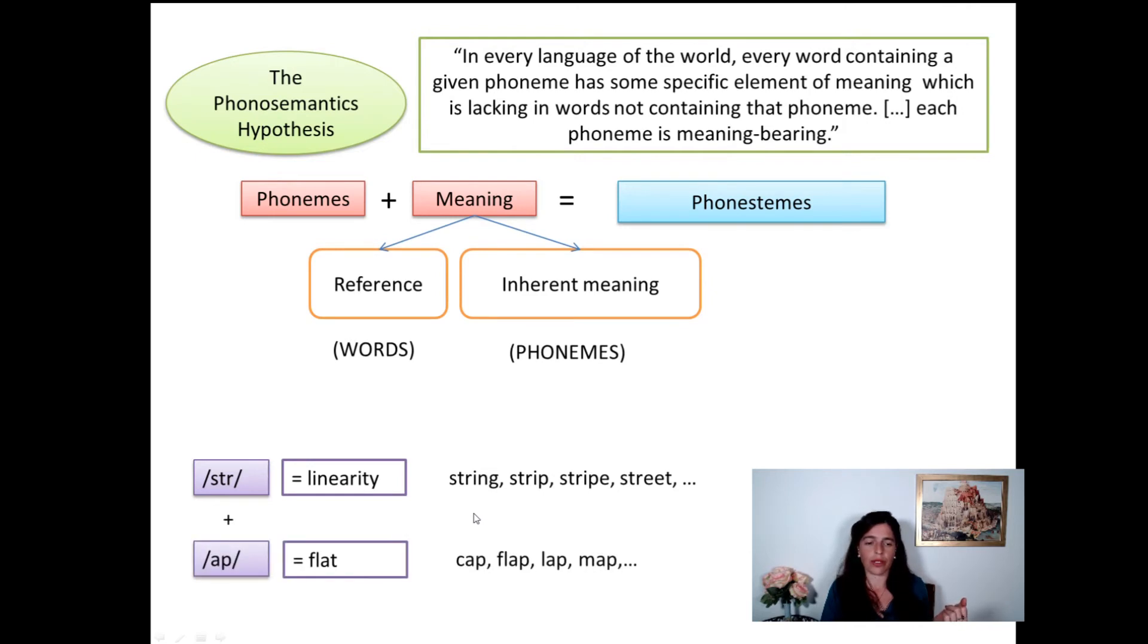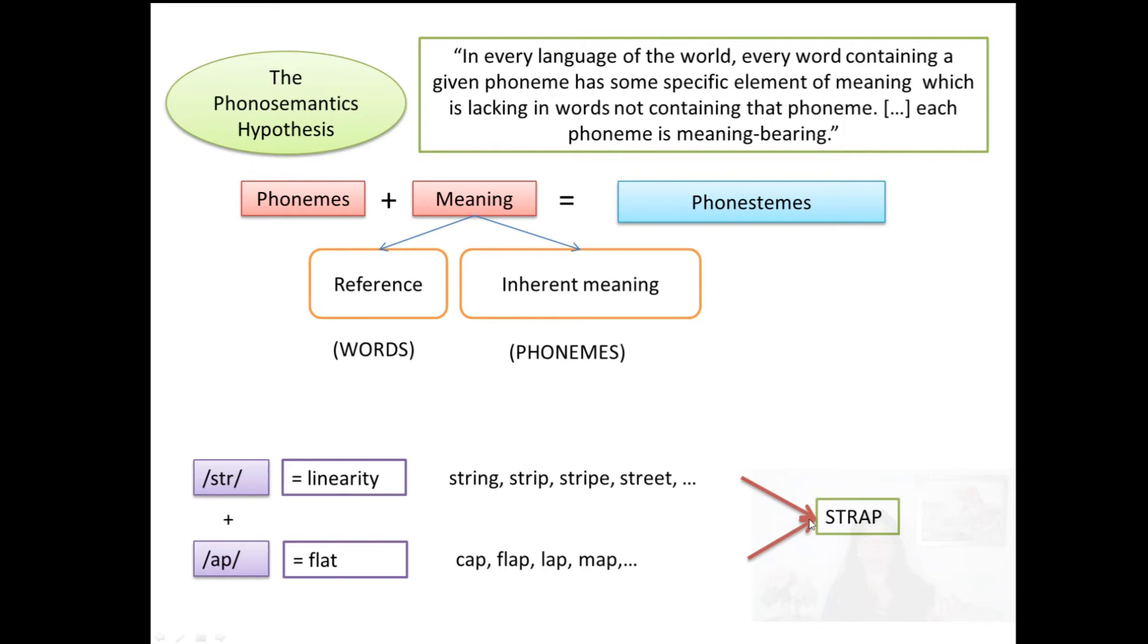And then you have the words with AP, and they happen to have some quality that tells you it's flat things. Cap, flap, lap, map. Okay, what happens if you combine the two? What word do you get? Strap. And what's a strap? It's a flat line, basically, it's a band.